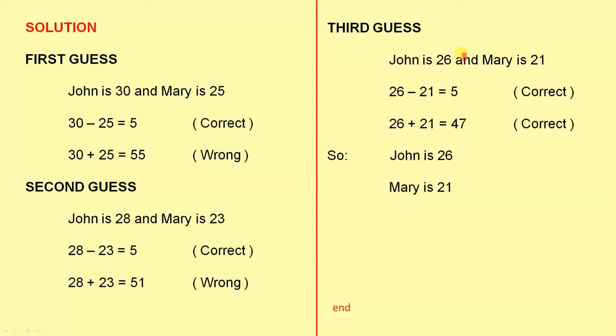For our third guess, we keep coming down. Let's guess that John is 26 and Mary is 21. 26 take away 21 gives us 5. That is correct. 26 plus 21 is 47. That's also correct because the sum of their ages is 47.